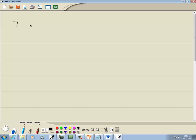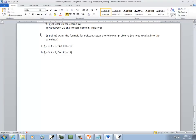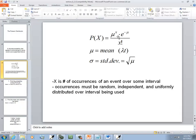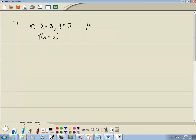So let's look at A. It tells us lambda is equal to 3 and T is equal to 5, and we want to find the probability that X is equal to 10. Well, from our formula, we need mu, which is lambda times T. So I'll take lambda times T, which would give us 3 times 5, which would give us 15.